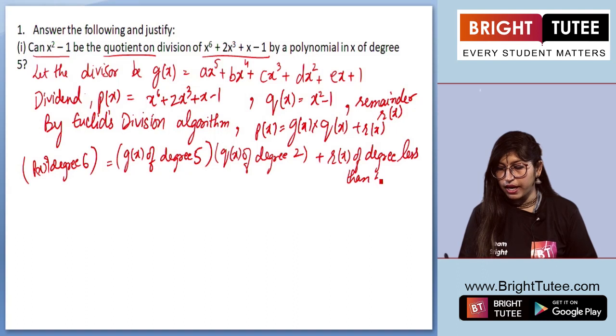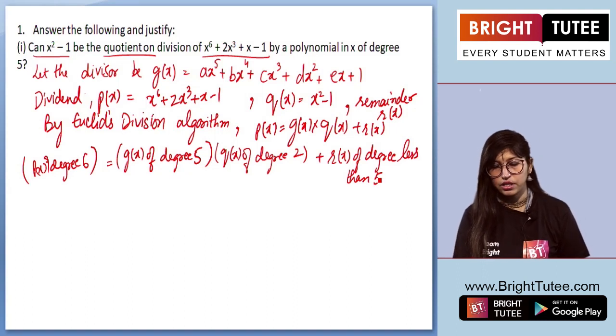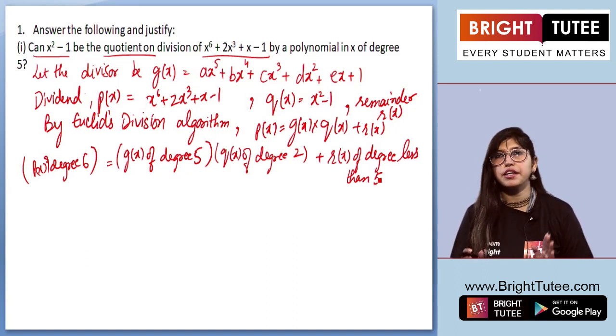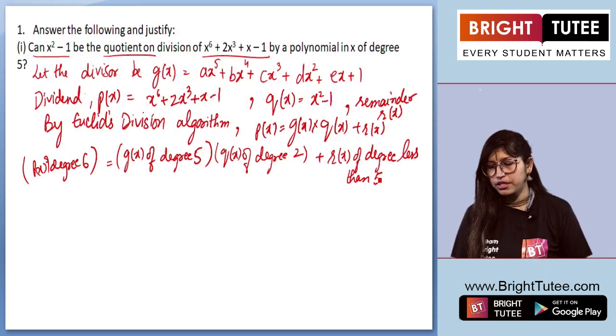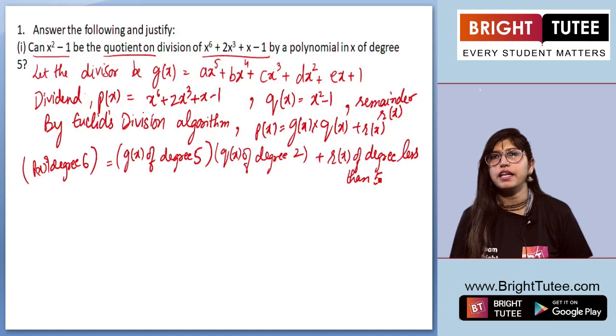And I hope you know why is it less than 5, because the divisor which we have is only degree 5, and remainder should be, for sure, less than the degree of the divisor. So, the degree of remainder will be less than 5.